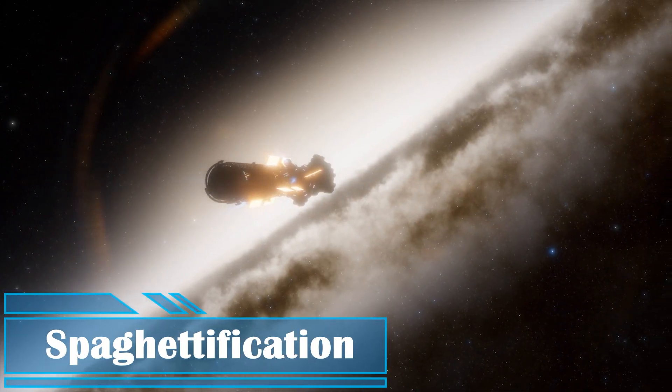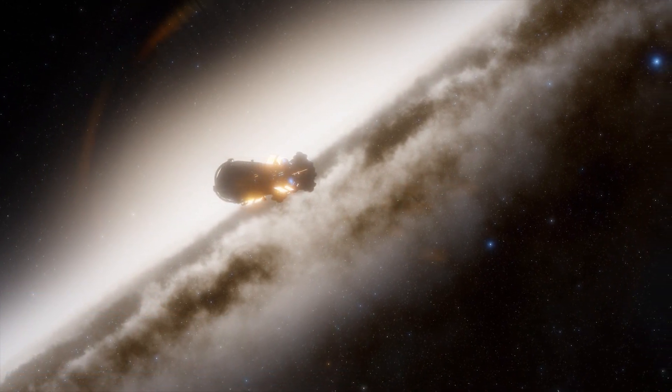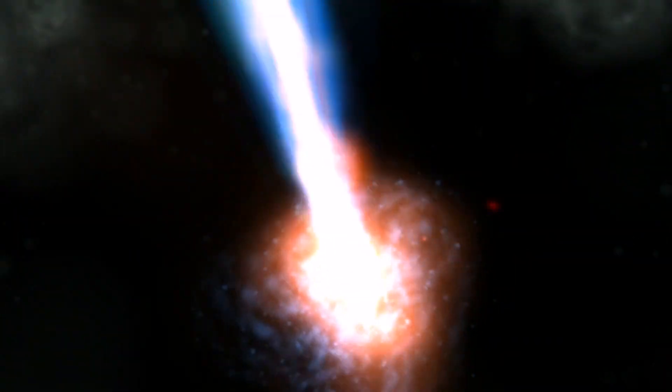Spaghettification: As objects approach a black hole, the tidal forces become incredibly strong, causing them to stretch and deform. This stretching effect, known as spaghettification, is a result of the variation in gravitational pull across the object.